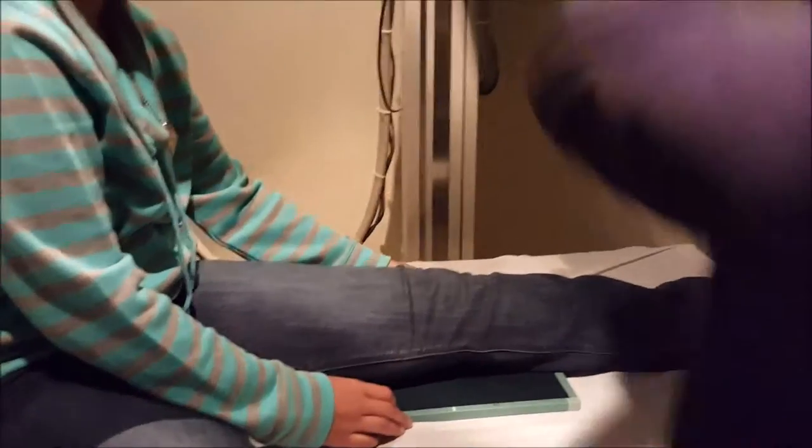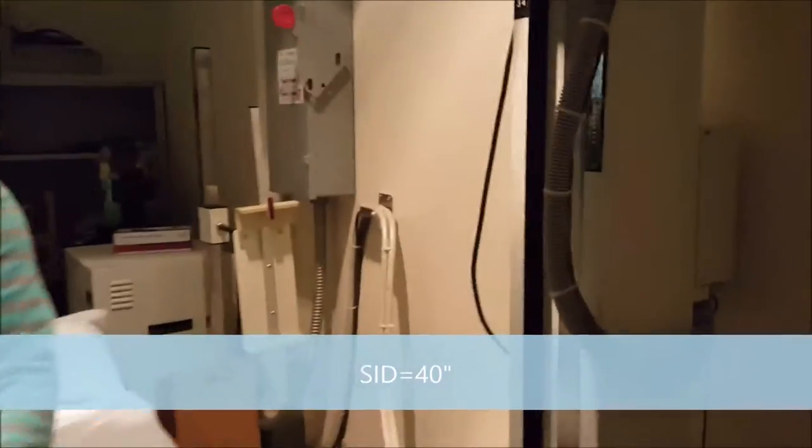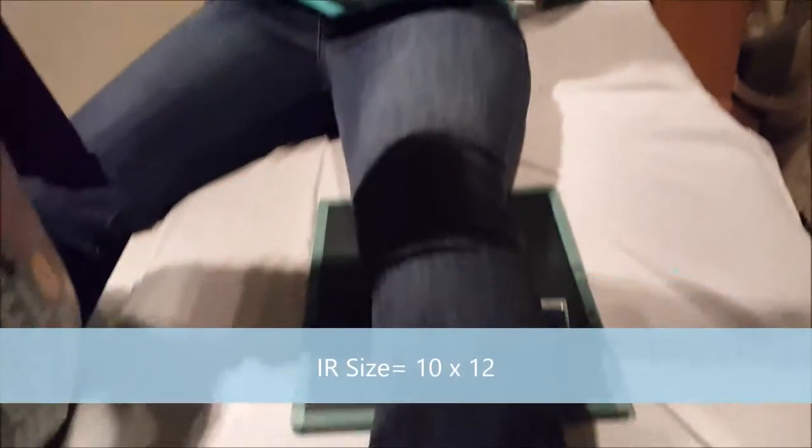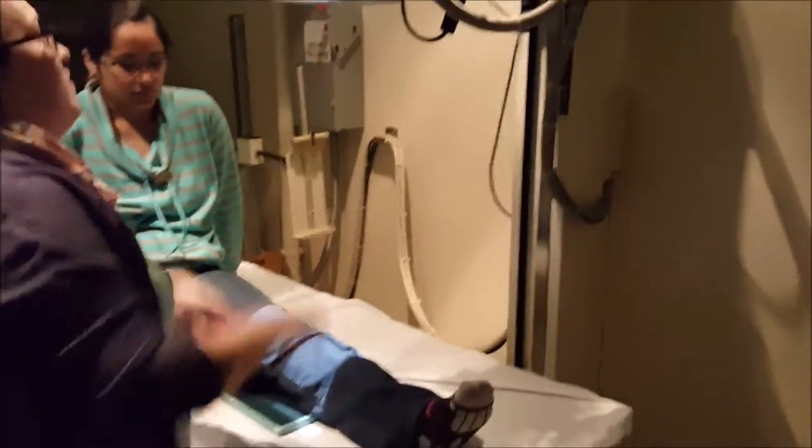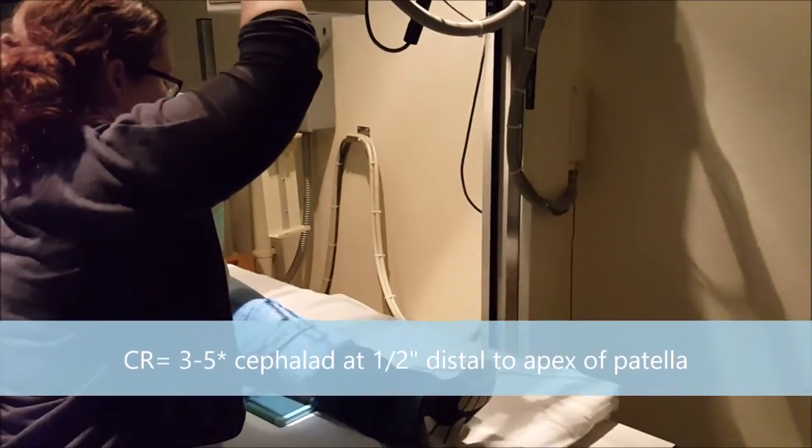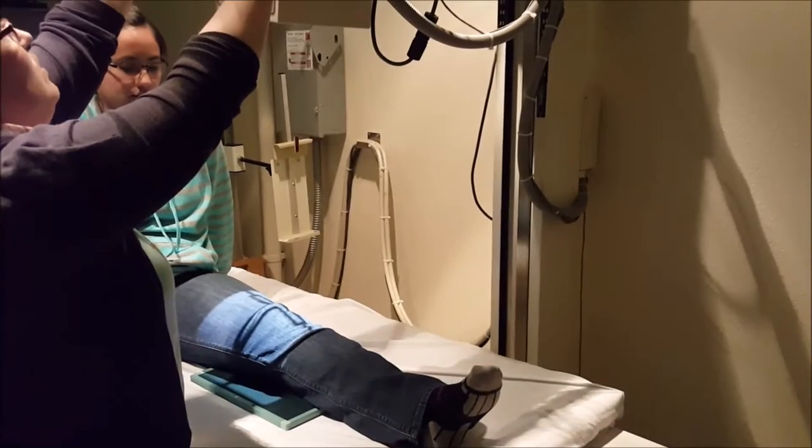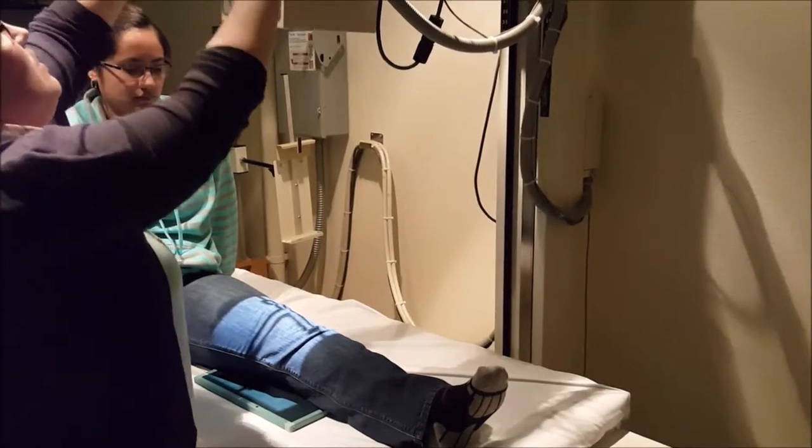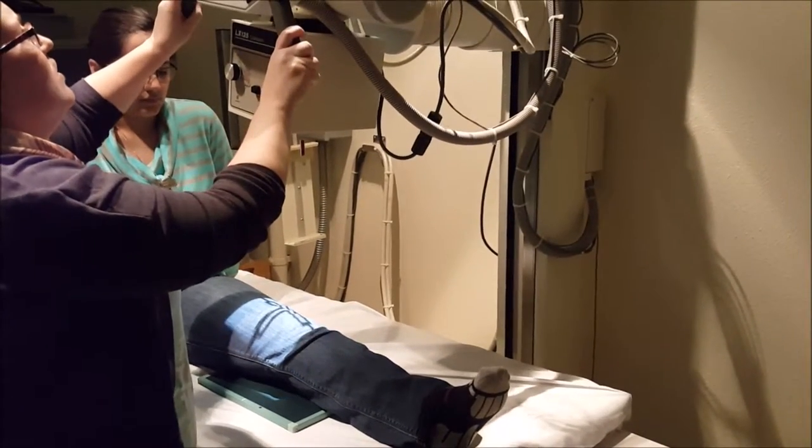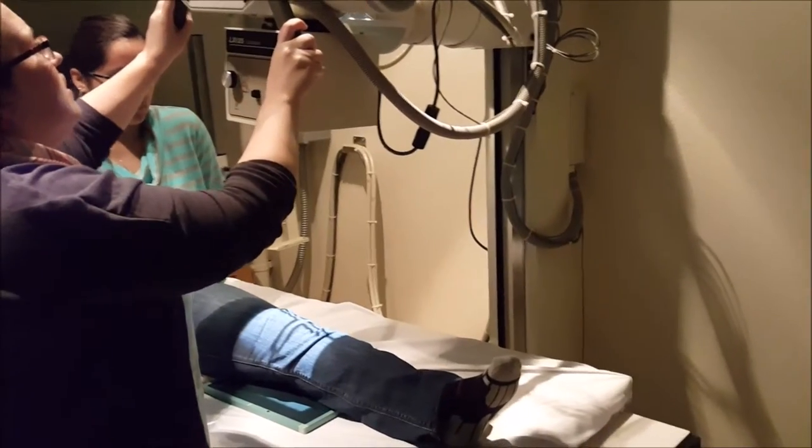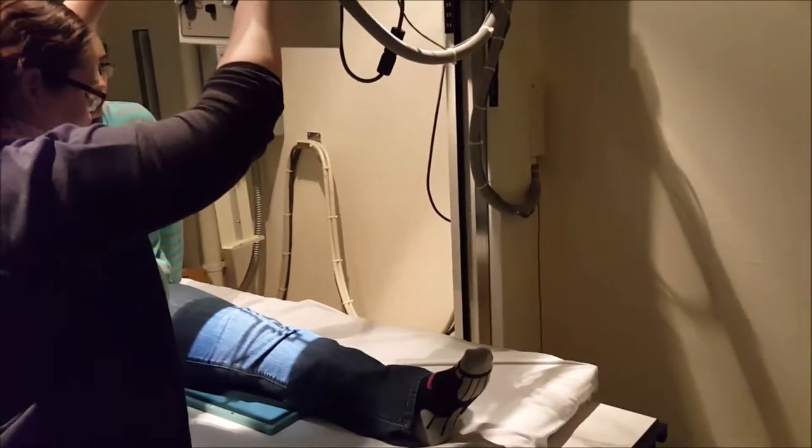For an AP knee, we're going to be at a 40 inch SID. We're going to use a 10 by 12 cassette. Now in your book it talks about different thicknesses of the knee at different angles. Most adults, you're going to use a 5 degree angle on. Sorry I'm short and I can't see. That's 5 degrees.